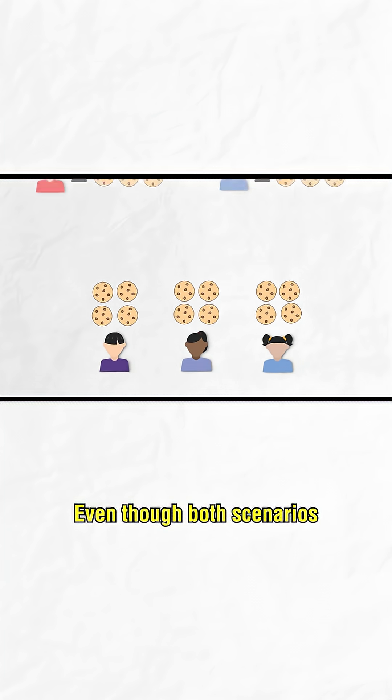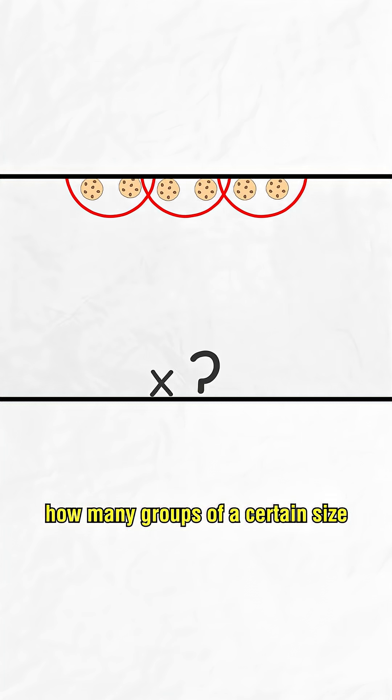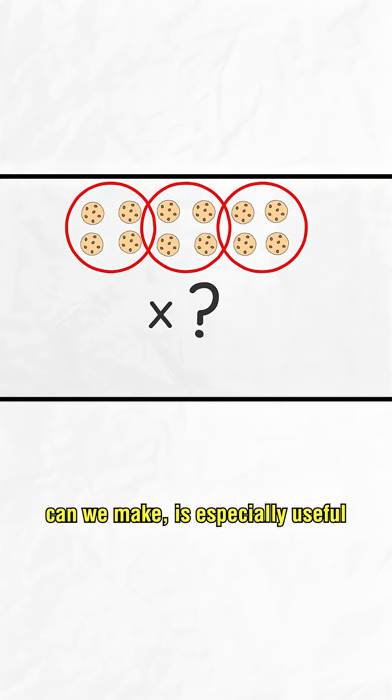Even though both scenarios result in the same answer, the process and the visual model looks different. This second interpretation, how many groups of a certain size can we make, is especially useful for understanding divisions of fractions.